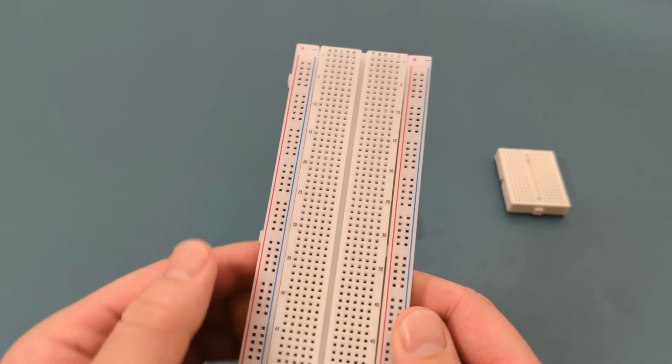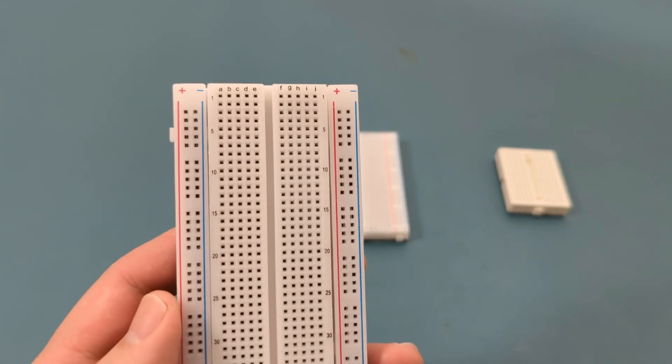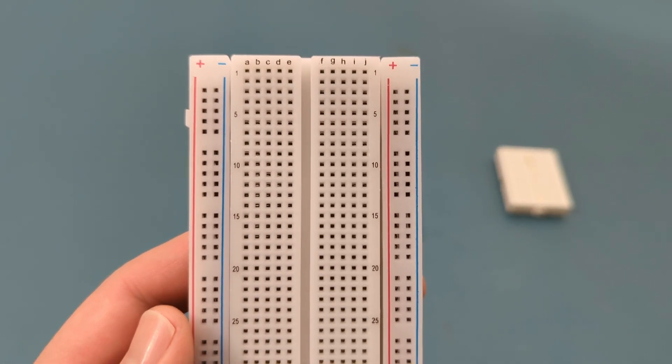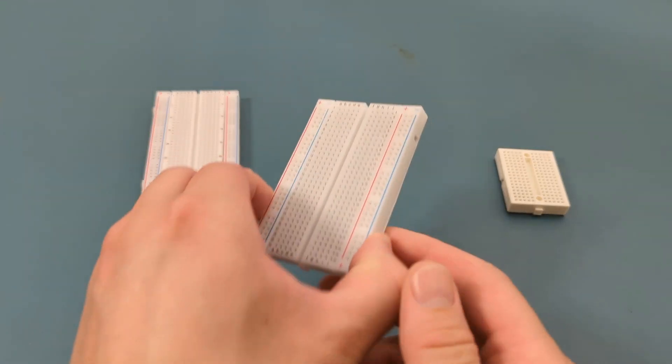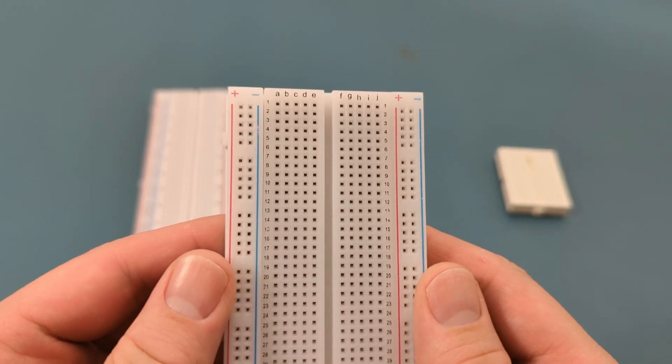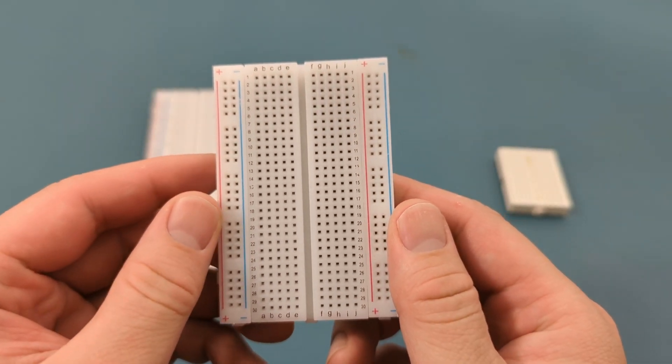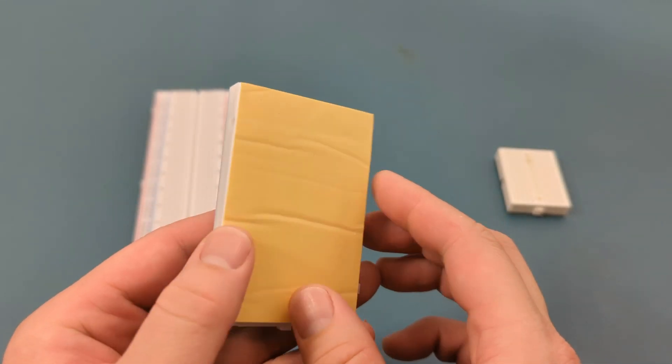Full-size breadboards are great when you have a lot of components and need more space. Half-size breadboards are the sweet spot for most beginner projects. Compact enough to fit on your desk, but with plenty of space to work.